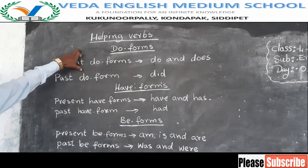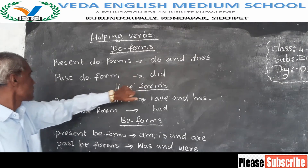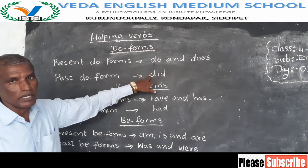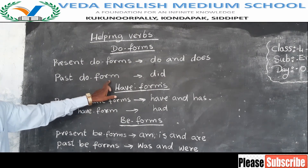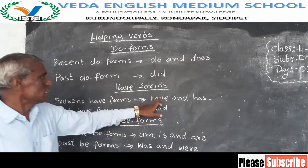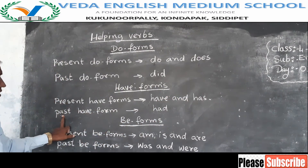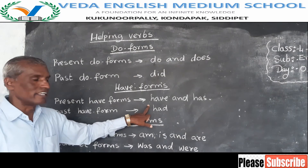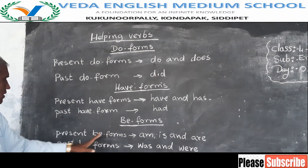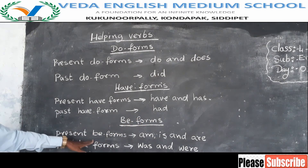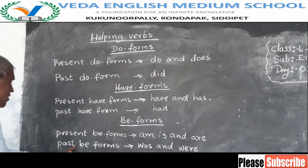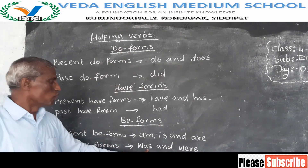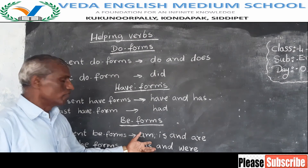If you want to make simple present tense, we use do forms. Past do forms are for simple past tense. For present perfect tense, we have to use have or has. For past perfect tense, we have to use had. For present continuous tense, we use am, is, or are along with V4. For past continuous tense, we use was or were along with V4.